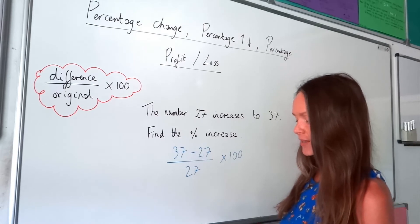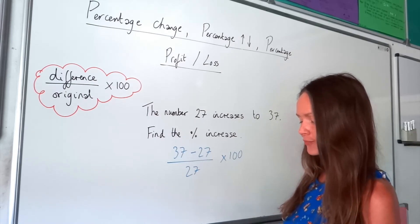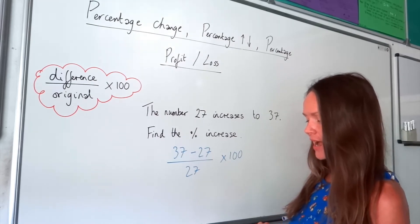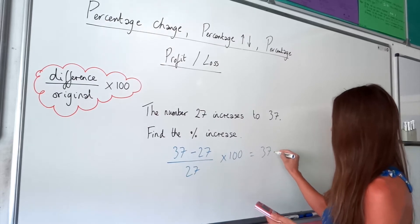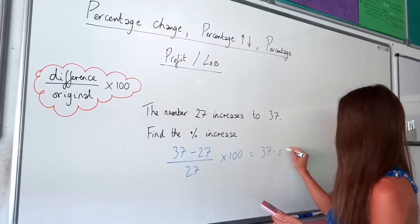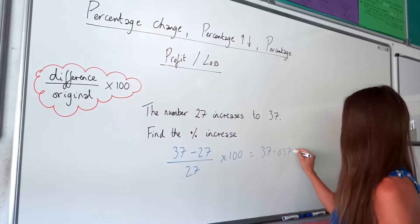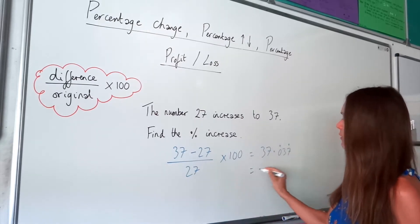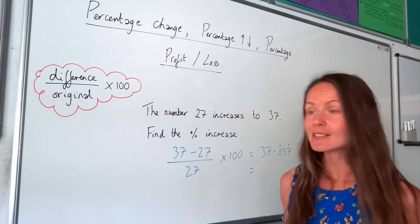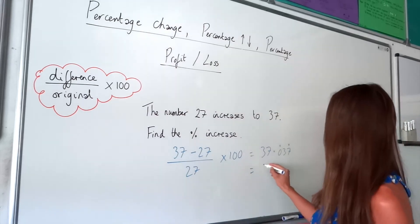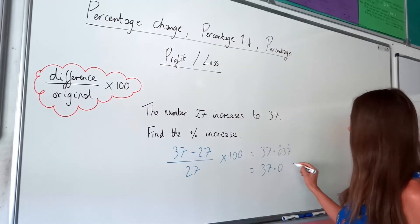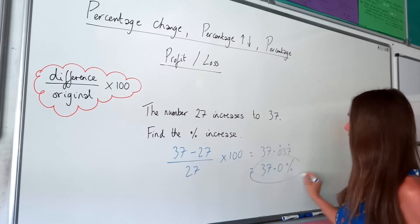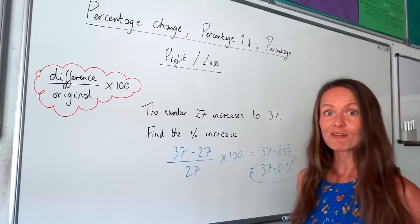So you can pop that in the calculator and we get a decimal answer — it's 37.037, and they're recurring there. So if I round that to three significant figures, I get 37.0%. So there's the first one.